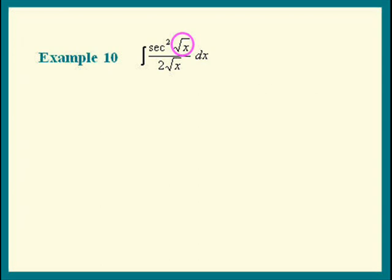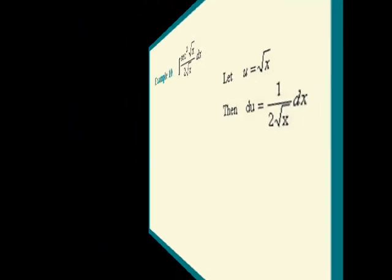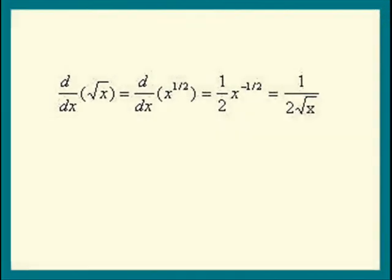If u is square root of x, then du is 1 over 2 square root of x times dx. If you don't know that, here's the derivation using the power rule — you could pause this frame and study that.